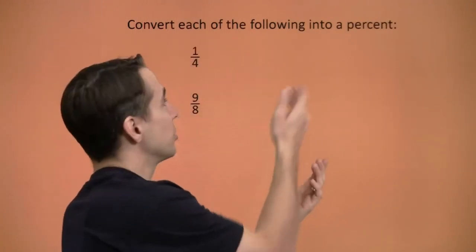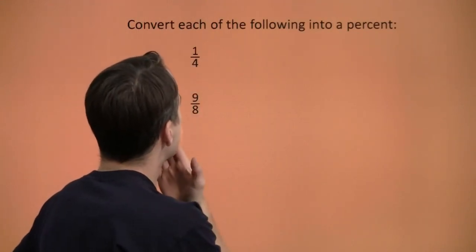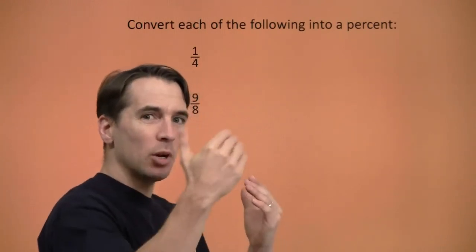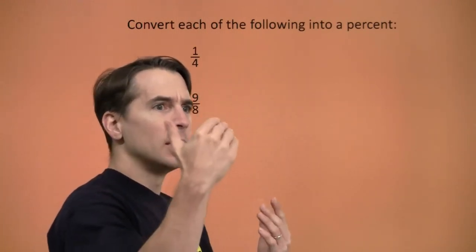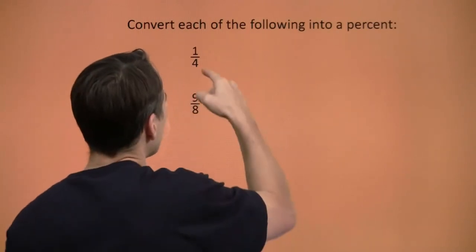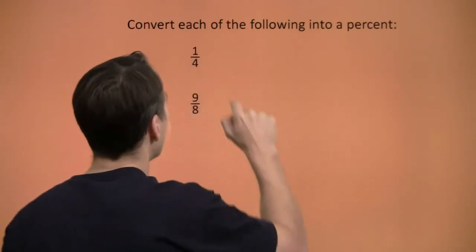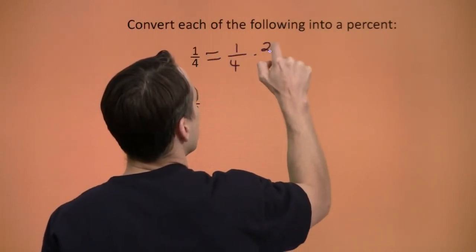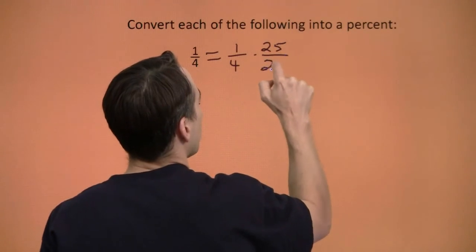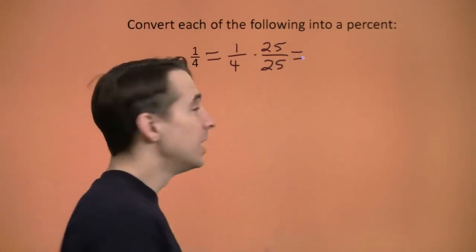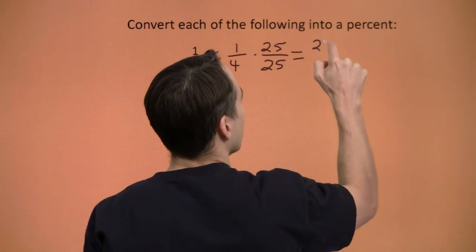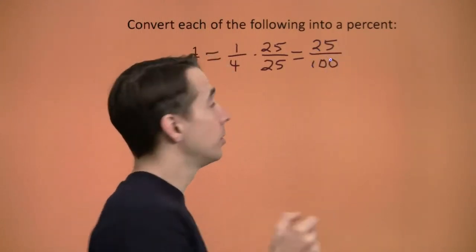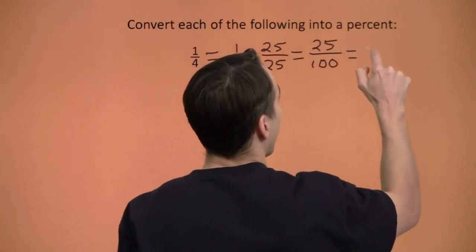Now that we know how to turn percents into fractions, let's learn how to turn fractions into percents. If I can turn a fraction into something over 100, then I'll be set. We'll use the strategy of multiplying by 1 — multiply by 25 over 25 to make the denominator 100. Once I have 25 per 100, I know I've got 25 percent.